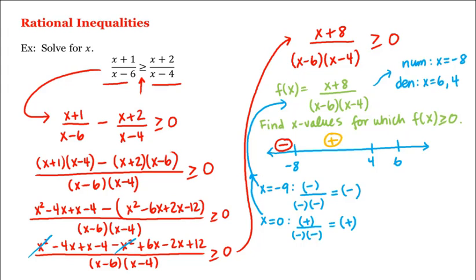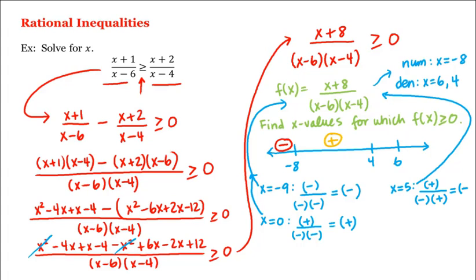And then in the third interval we can choose x equal to 5, for example. Plugging 5 into the factored form of f, we have 5 plus 8, which is a positive number, divided by 5 minus 6, which is a negative number, times 5 minus 4, which is a positive number. And positive divided by negative times positive is negative, which means in this third interval, f is negative.